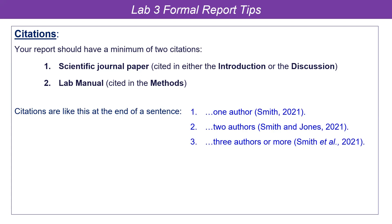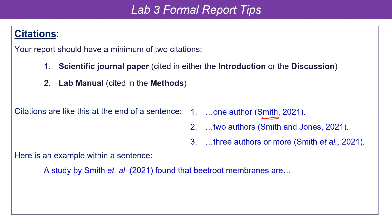A citation is a referral to a reference source within the body of your report — it doesn't give the full bibliographical information. The method we're using for Biology 107 is to put the author, comma, the year. If you have one author, it's just author, comma, year. If you have two authors, list both last names followed by the date.